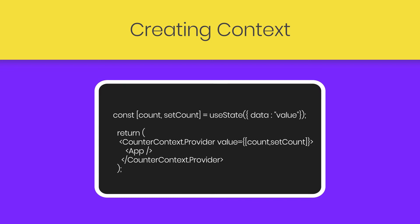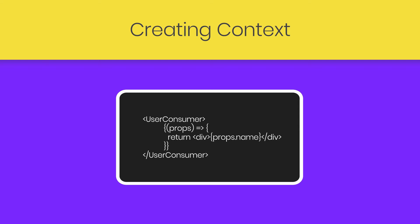The Consumer allows child components to access values from the parent that is wrapped by the Provider. If the App is a parent component wrapped in a context Provider, we can access the context value in any of App's child components. To create a consumer, we import it from the store and use it as a component. Here you can see I have a User component as my consumer, and inside it I iterate over properties and display them.